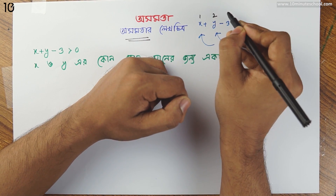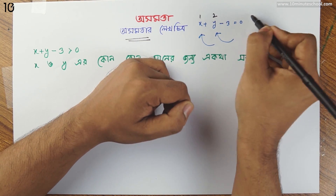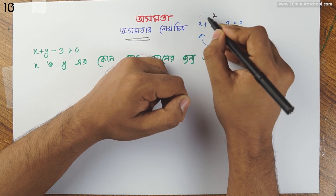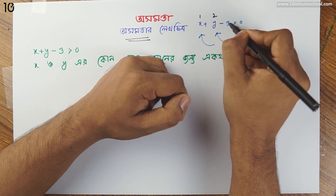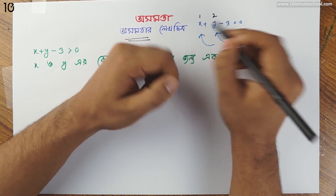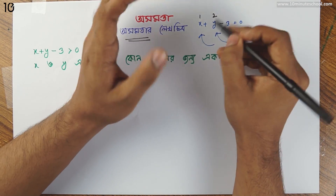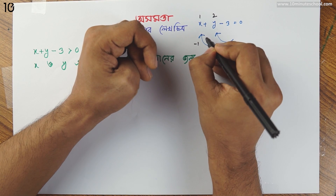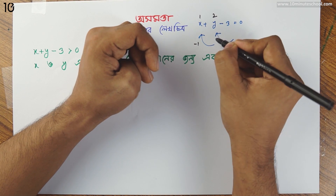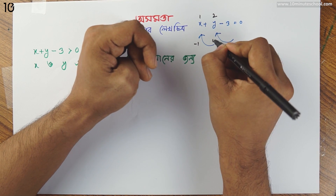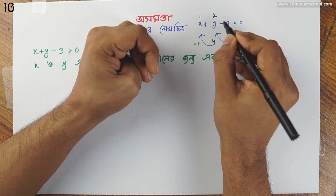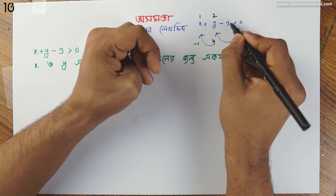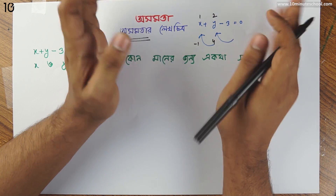The left side and right side: 1 plus 2 minus 3 equals 0. If you want x to have minus 1 and y to have minus 4, then minus 1 plus 4 minus 3 equals 0.